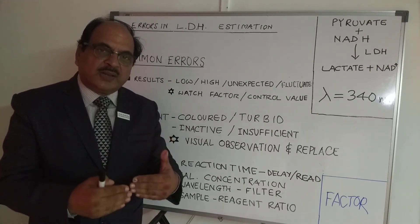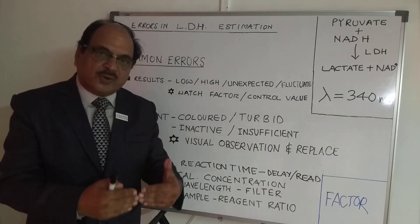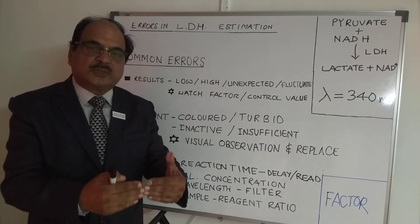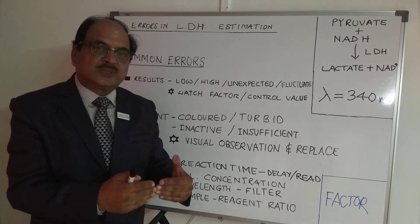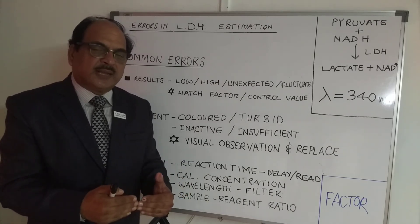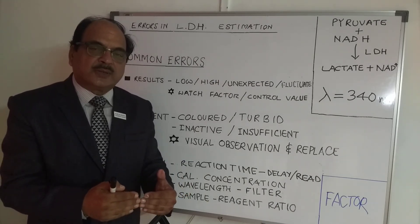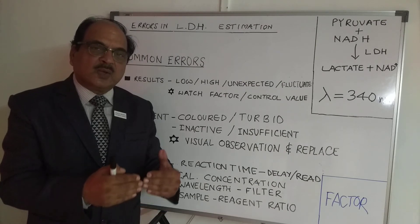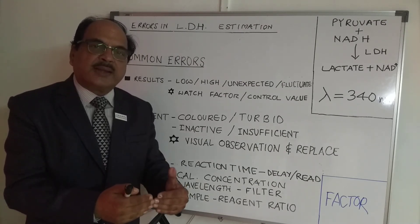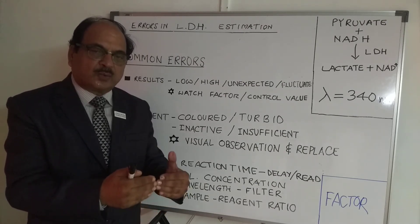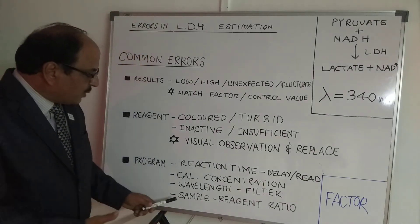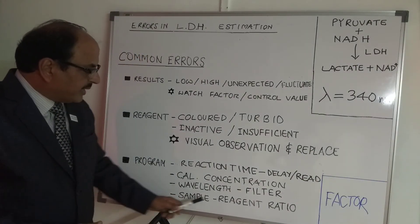Next is wavelength. The standard wavelength for LDH is 340 nanometers. Wavelength filters deteriorate over time as the instrument ages. Ensure that your instrument's 340 nanometer wavelength is well calibrated and functioning properly to get accurate results.